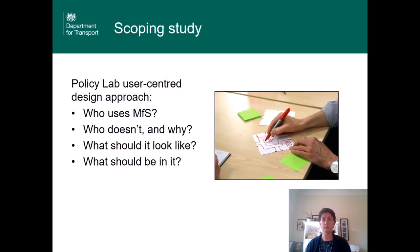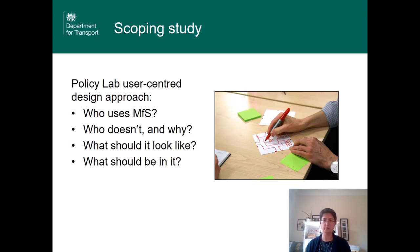We carried out the scoping study, commissioning the Cabinet Office's Policy Lab last year. They use user-centred design approaches and agile project approaches to really drill down into the issues. We asked them to look at several questions: do we need MFS, who uses it, and most importantly who doesn't use it and why not. The project included immersive research, with researchers going out to practitioners in their working environments, talking to them about what documents they used and why. It also included an all-day stakeholder event which CIHT kindly hosted, getting people from many different disciplines thinking about what a new MFS should look like.